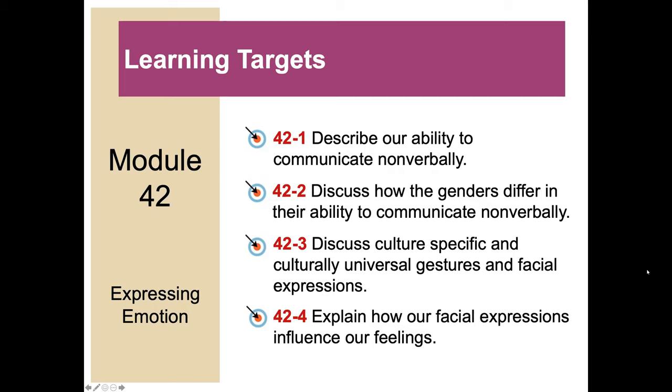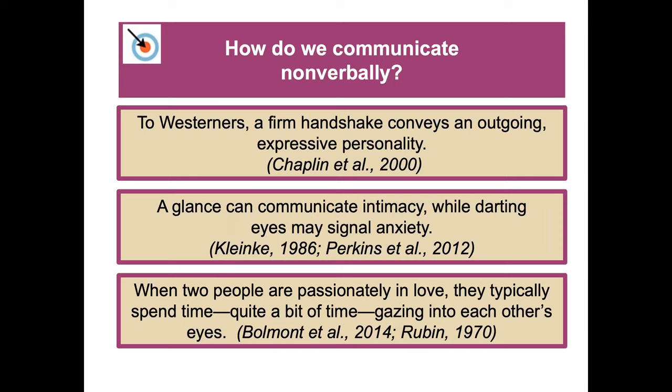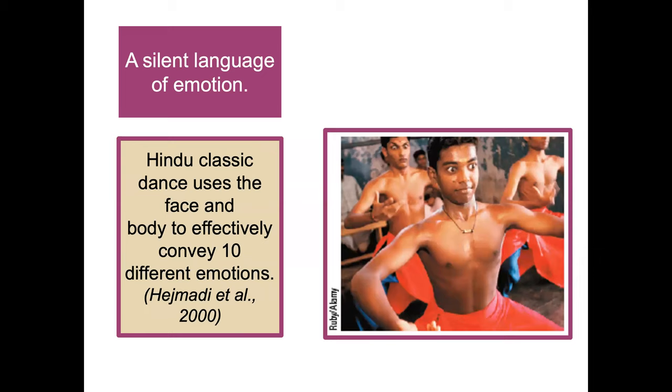So how do we communicate non-verbally? For Westerners, a firm handshake conveys an outgoing, expressive personality. A glance can communicate intimacy with someone, while darting eyes — looking away with eyes darting all over — may signal anxiety. When two people are passionately in love, they typically spend quite a lot of time gazing into each other's eyes, according to research.